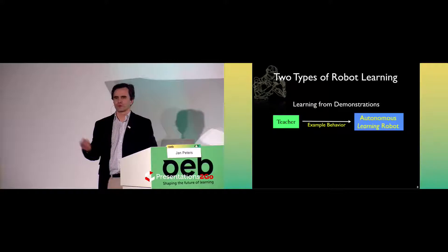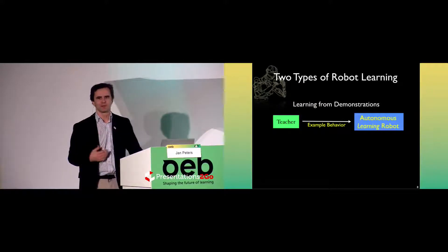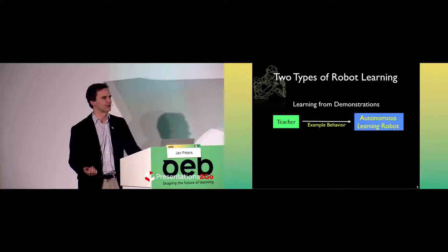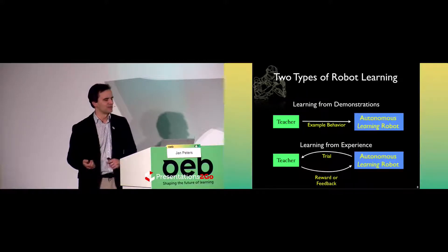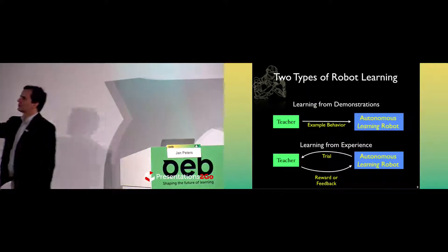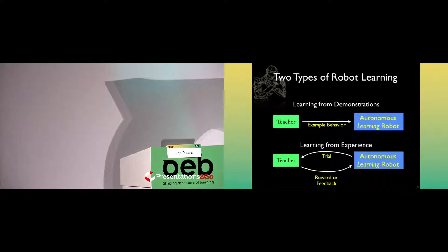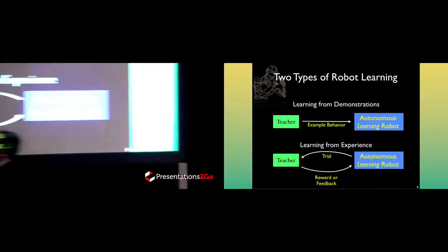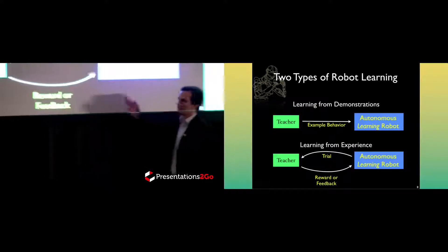These days, we have slightly better methods. That can't give us everything. I mean, otherwise all our students could learn everything from the lecture. They would not require these painful exercises. So instead, we need to also learn from experience, in which case the robot has to perform trials, show these trials to the teacher, and receive reward or feedback.